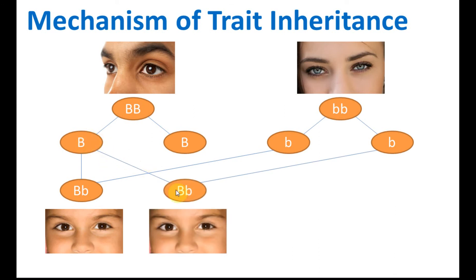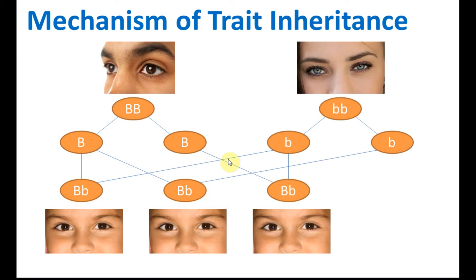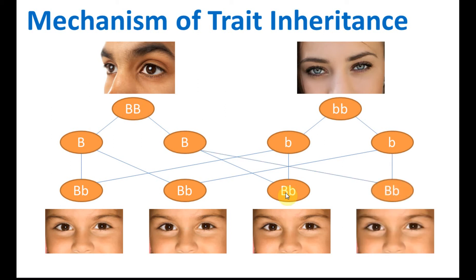How about this gene combined with this gene? We still get the same thing — the brown eye is dominant and the blue eye is recessive, and therefore the child has brown eyes. The same applies to all other combinations. Which means if we have a pure brown eyes and a pure blue eyes, all the children will have brown eyes because brown eye is dominant. All are hybrids and all have brown eyes.